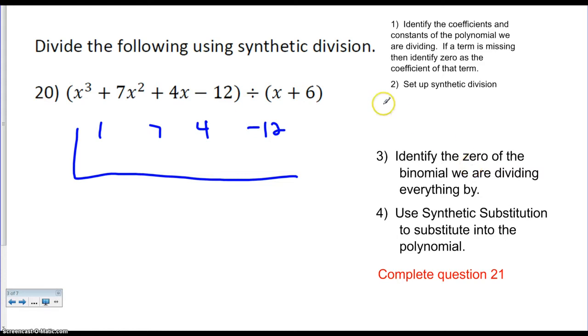And then I set up synthetic division. I want to identify the 0 of the binomial we are dividing by, so what I'm going to do is set x plus 6 equal to 0, and I will get x to equal negative 6. So I know that what I'm going to do is use synthetic substitution and substitute negative 6 into it.